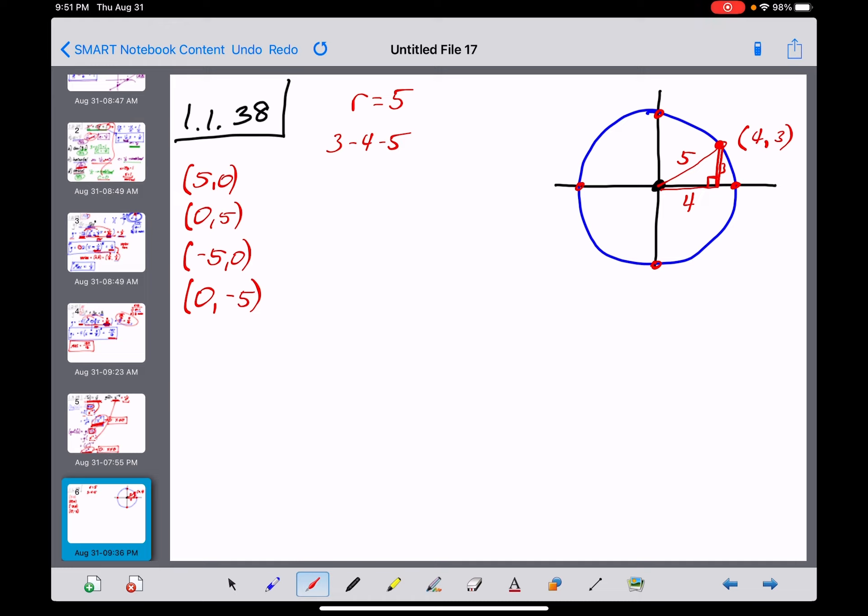Now, guys, this would not work if they had told us to let r equal 6. Why? Because there's no Pythagorean triple here that ends in a 6. But there is one that ends in a 5. So that's where they were kind of steering you on this problem here.